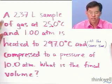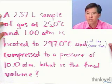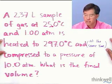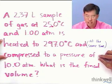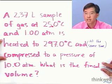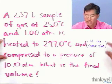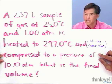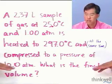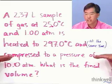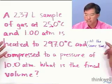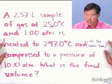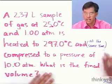Here's an example problem. We start with a 2.37 liter sample of gas at 25.0 degrees Celsius and one atmosphere, and we heat it to 297 degrees Celsius while compressing it to 10 atmospheres. What is the final volume? Note that heating it, we anticipate the volume goes up, but compressing it, we anticipate the volume goes down — two forces acting in opposite directions, so we can't use intuition to predict the outcome.